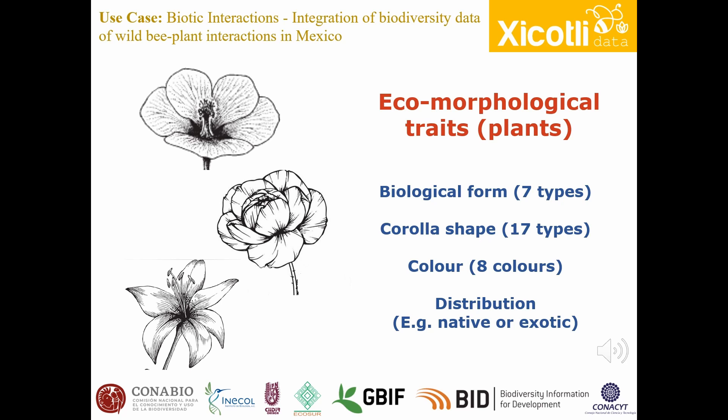Beyond the where and when, let's talk briefly about the ecomorphological features considered in the project. For plants visited by native bees, we consider four groups of traits: seven types of biological forms, 17 corolla forms, eight general corolla color combinations, and distribution. This last feature highlights whether the plants are native or exotic at the scale of Mexico.